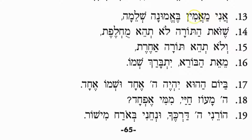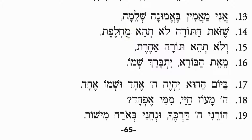That's one of the creedal statements. There are 13 in total; he gives us two here. Ani ma'amin be'emunah shleimah — I believe with complete faith. Shezot haTorah lo tehe muhlefet — that this Torah shall not be switched out. V'lo tehe Torah acheret — and there shall not be another Torah from the Creator, may his name be blessed. This means we believe the revelation God gave us at Sinai is self-sufficient.